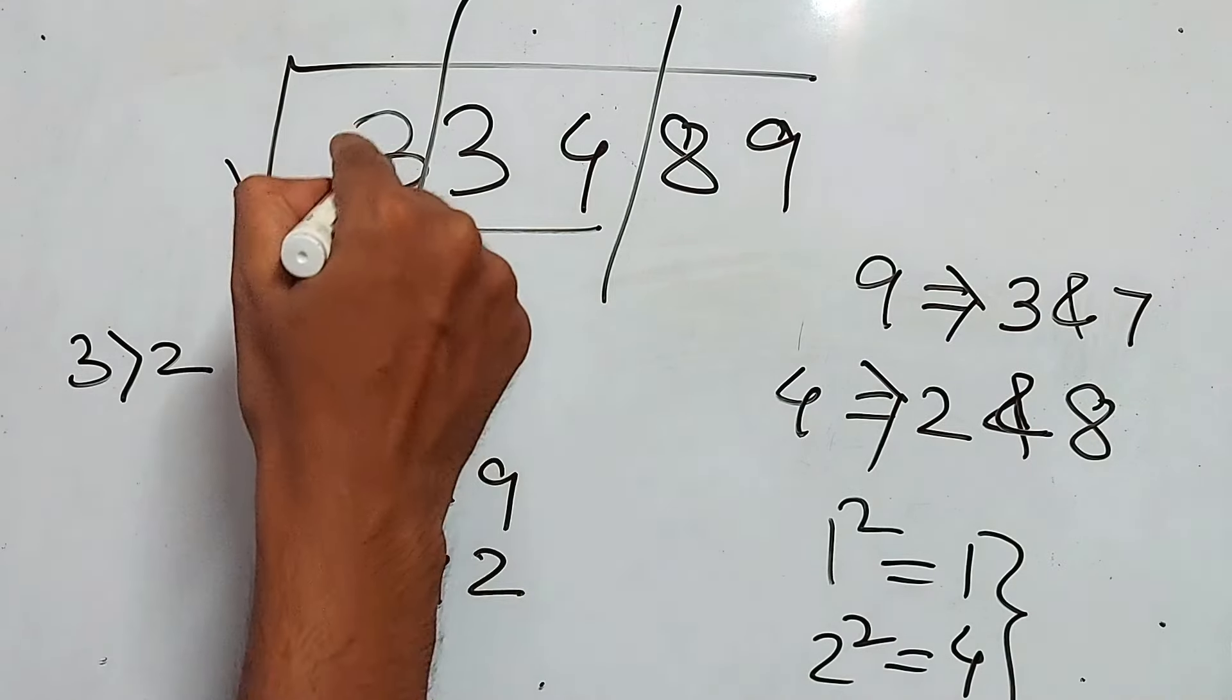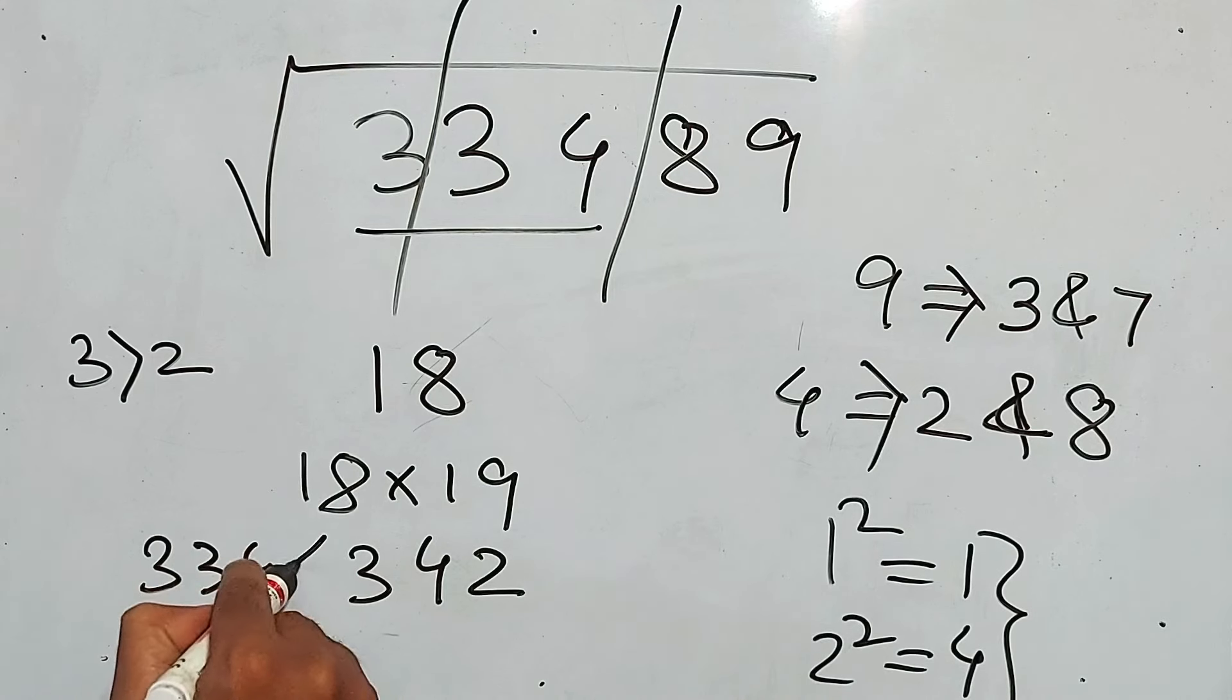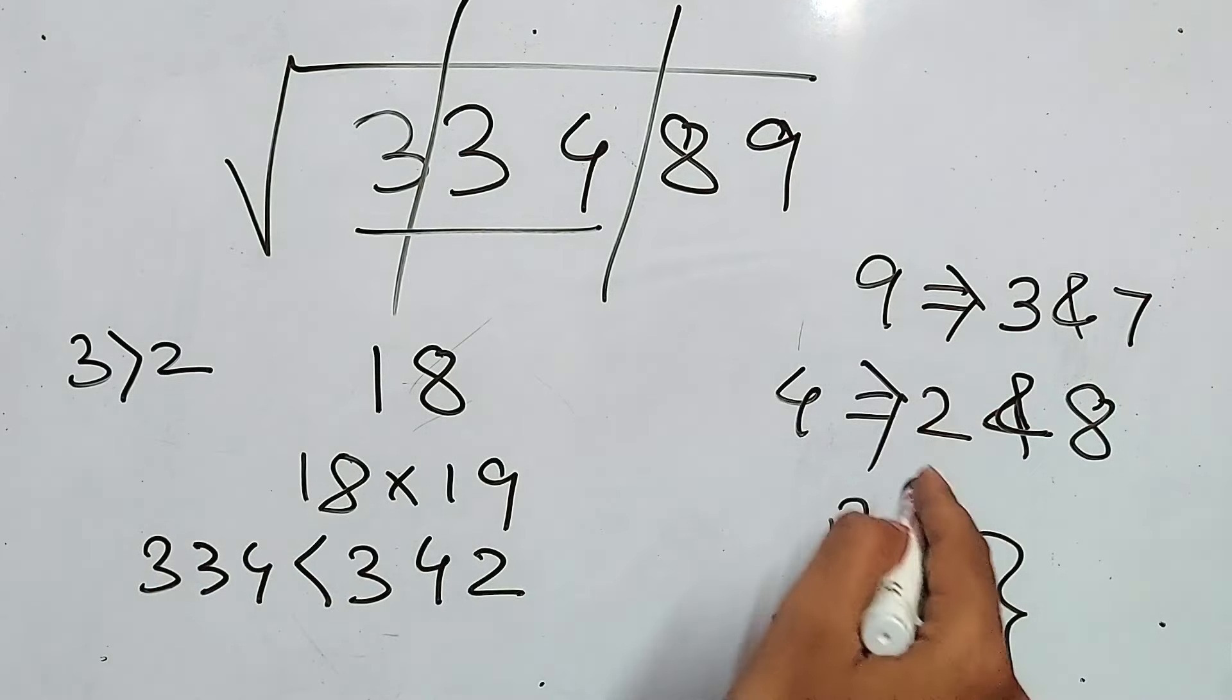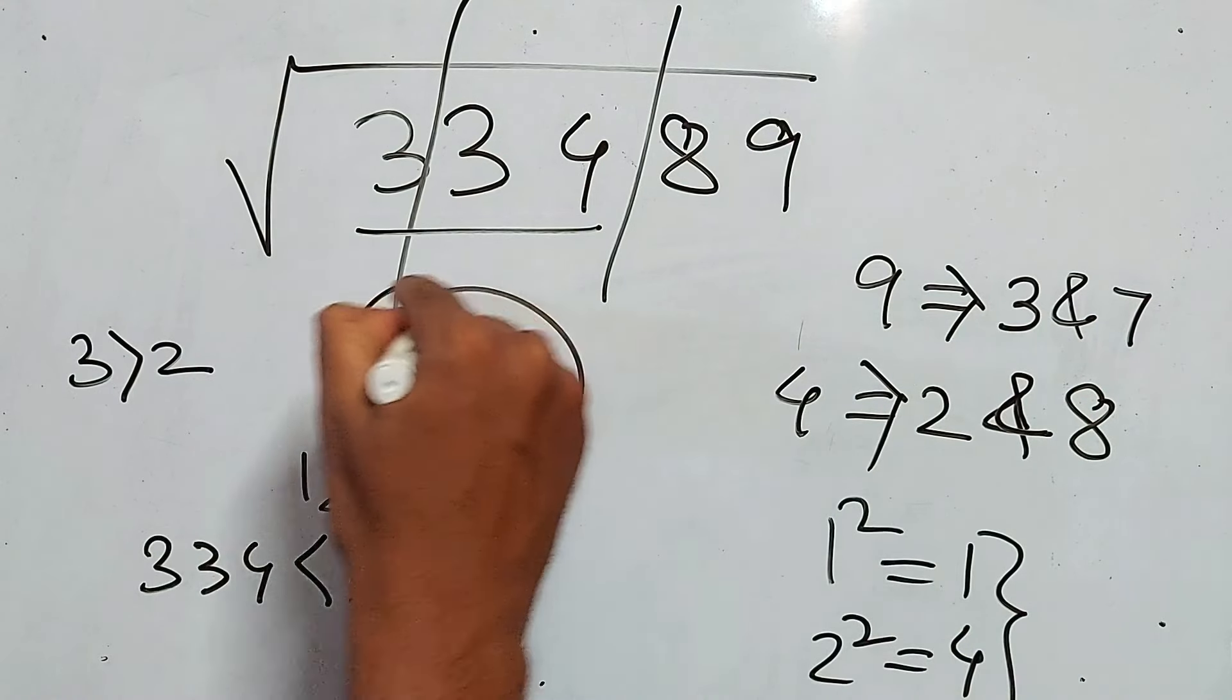Now 342, and our number is 334. So 334 is less than 342. So we have to take the smaller one, that is 3. So our answer is 183.